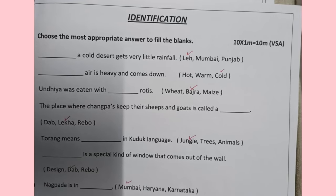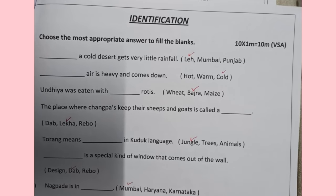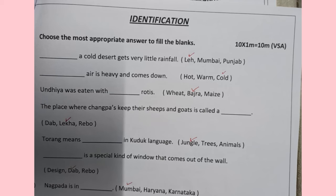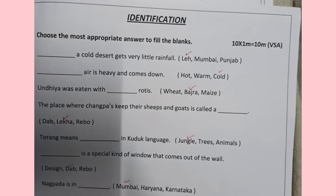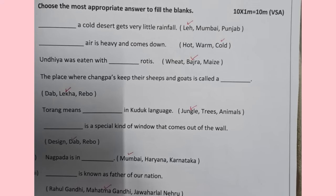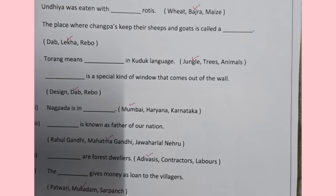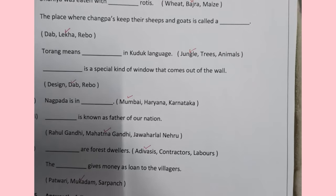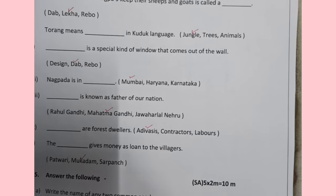Moving to the identification section — choose the most appropriate answer to fill in the blanks. Leh is a cold desert. Cold air is heavy and comes down; warm air is light. Undia was eaten with bajra roti. The place where Changpa keep their sheep and goats is called lekha. Torang means jungle in Kuduk language. Dab is a special kind of window that comes out of the wall. Nagpada is in Mumbai — it was the stadium where the girls practiced. Mahatma Gandhi is known as the Father of the Nation. Adivasis are forest dwellers. The Mukaddam gives money as loans to villagers.